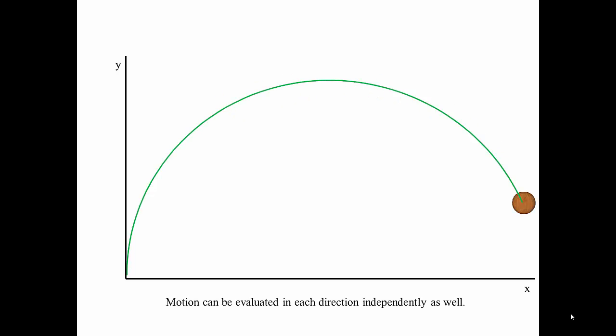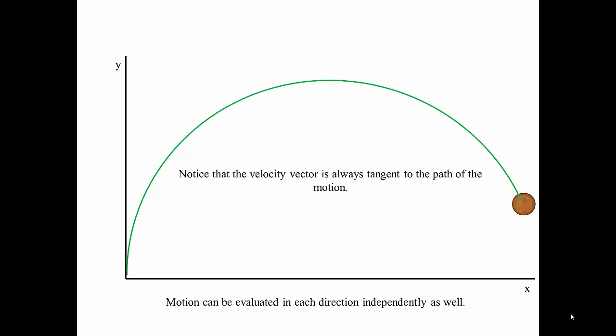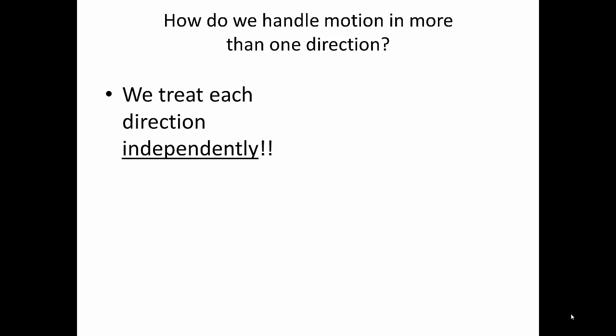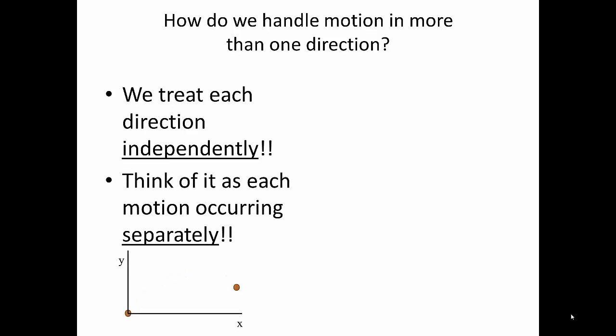Motion can be evaluated in each direction independently. A ball travels through the air along a curved path, but we can look at each motion independently. In the x direction, the ball moves straight to the right. In the y direction, the ball goes up to the top and then back down, but the final position is the same as when the ball followed the path. Notice also that the velocity vector at any point is always tangent to the path. We treat each direction independently, like our ball example.